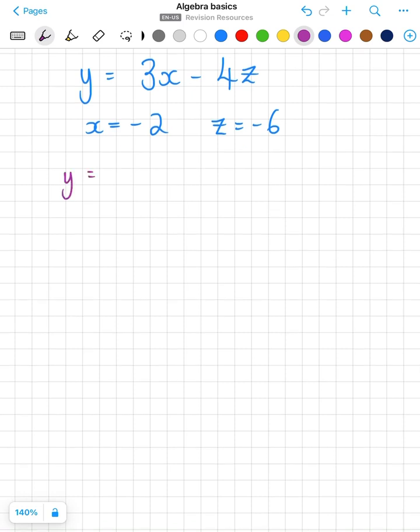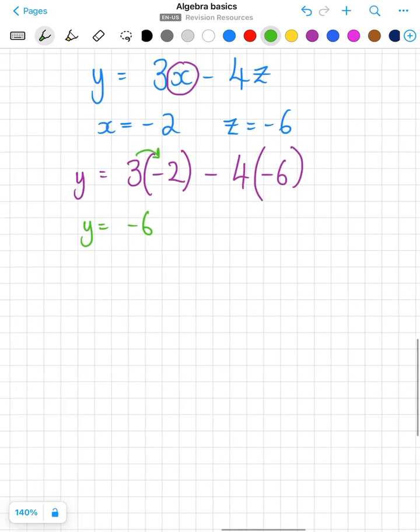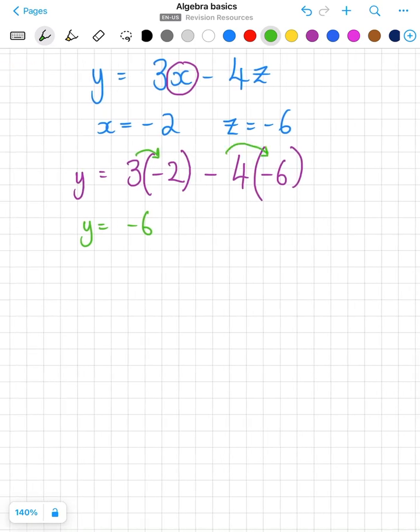Y equals, x is minus 2, so instead of x I change it for minus 2 and use my bracket. Minus 4 bracket z, z is no longer z, z is minus 6. The brackets mean to multiply so I'm literally doing 3 times minus 2, plus times a minus is a minus, and then I'm going to do the same here, minus 4 times minus 6, minus times a minus is a plus, 4 times 6 is 24.